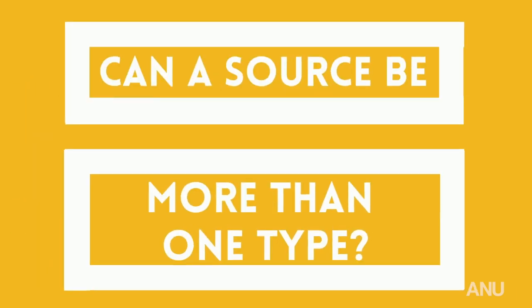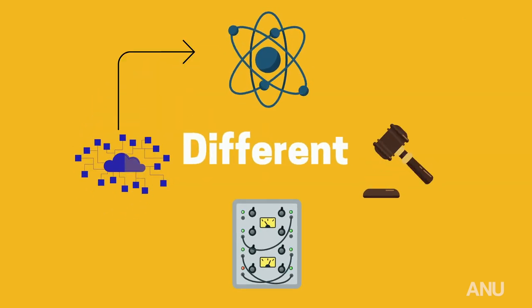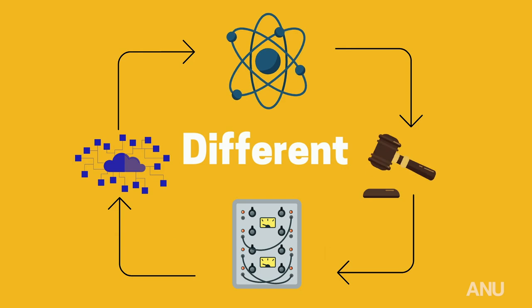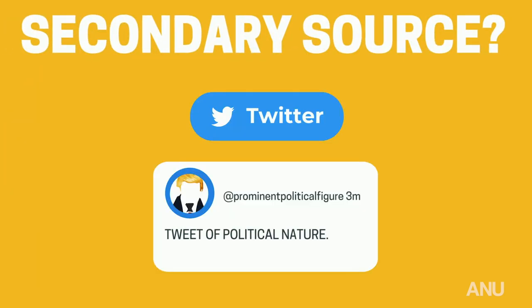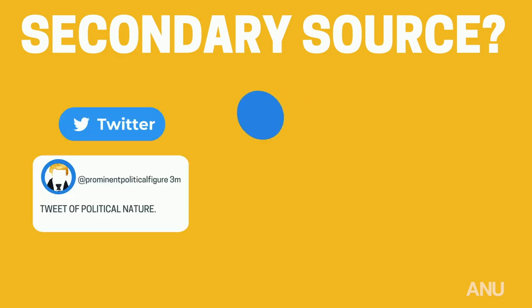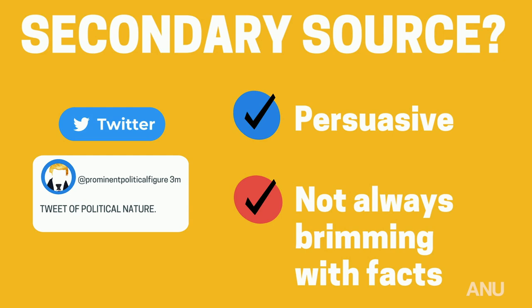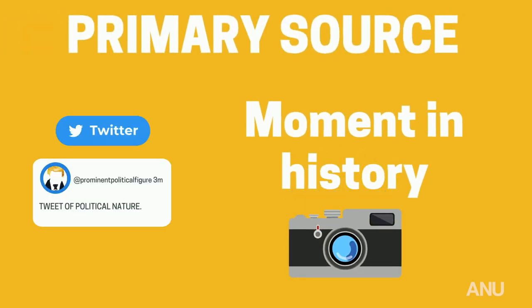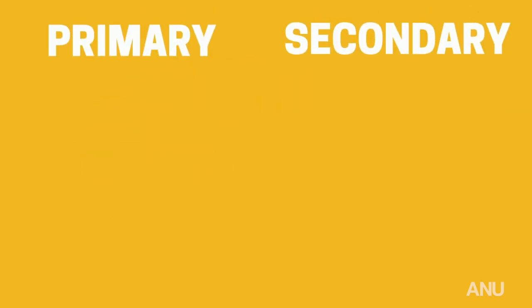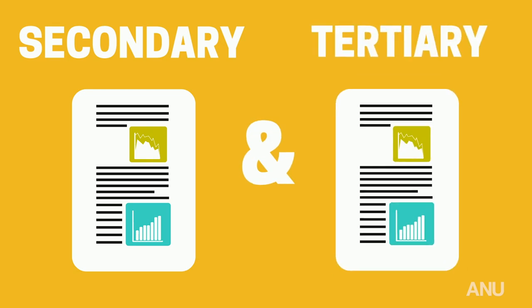Then there is the difficult question: can a source be more than one type? The answer is yes, but annoyingly this can be different depending on your individual context. Consider a speech or even a tweet by a prominent political figure. You could consider this a secondary source — yes, it is persuasive and, let's be honest, not always brimming with facts — but the speech itself happened as a moment in history, making it a primary source in that context. So a source can be primary in one context and secondary in another, or a source can be both secondary and tertiary.